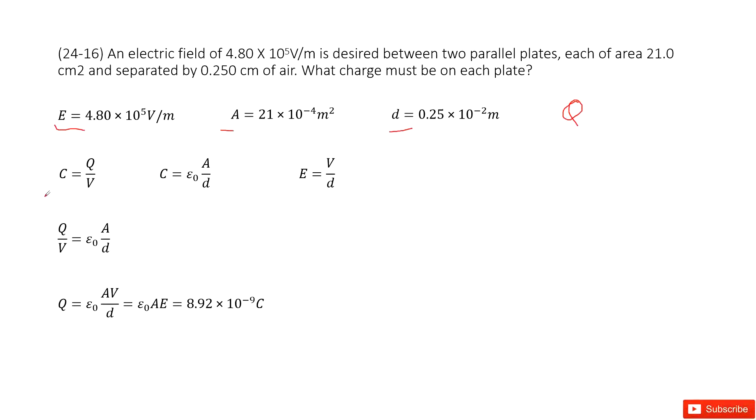In one way, we can write the capacitance as charge over potential. In another way, we can write the capacitance as epsilon naught times A over d. These are two ways to write the capacitance.